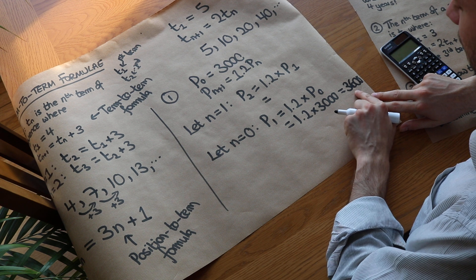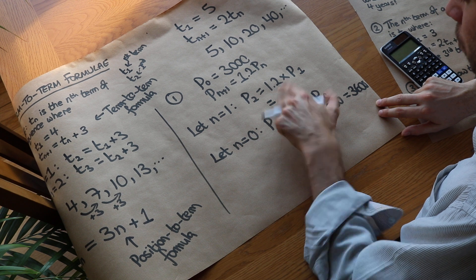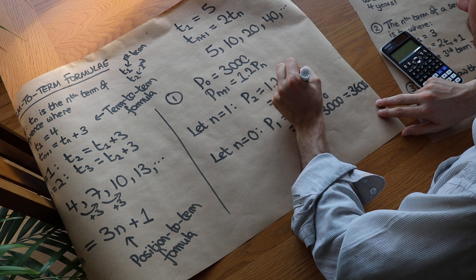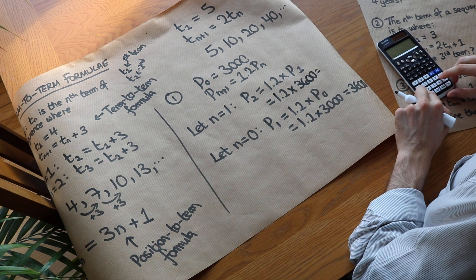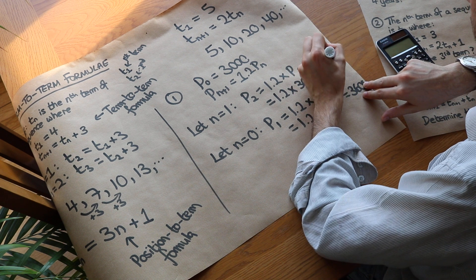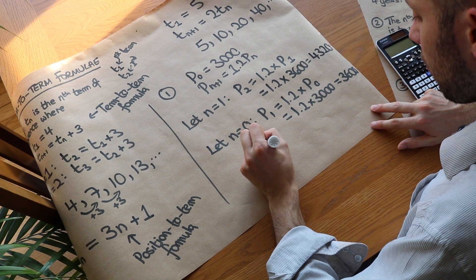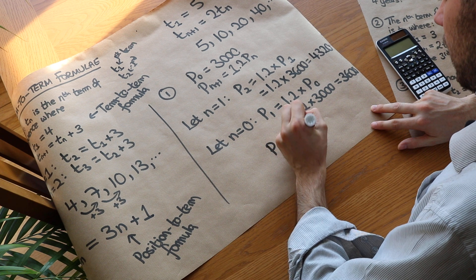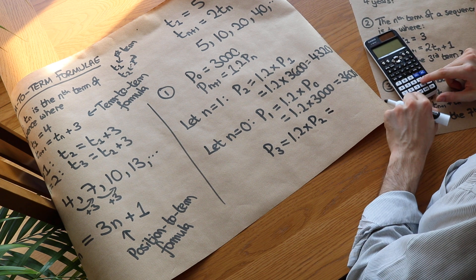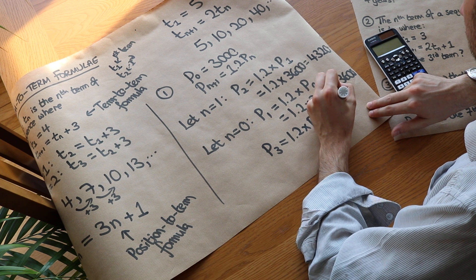After one year the population is 3600. Then the population after two years is 1.2 times the population after one year, which we worked out as 3600. Doing 1.2 times 3600 on the calculator gives 4320. Then p3 is 1.2 times p2, which is 1.2 times 4320, giving us 5184.